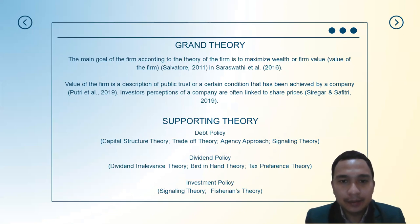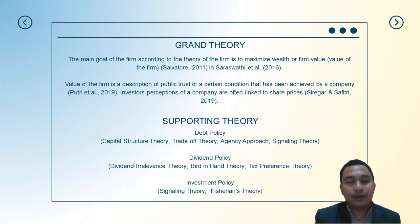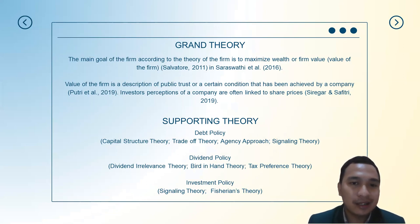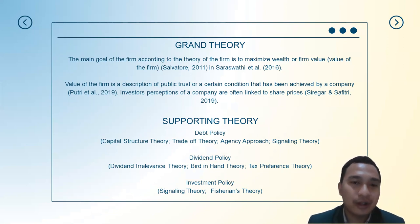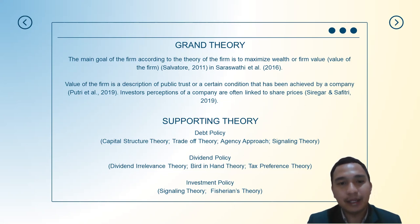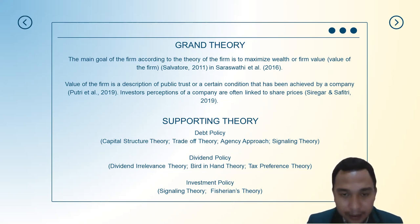In the theory chapter, we have a grand theory and supporting theories. For the grand theory, we use the Theory of the Firm. According to Salvatore in 2011, the main goal of the firm is to maximize wealth or firm value — this is the big statement used in the opening. The value of the firm is a description of a company's condition achieved over time, and investor perception of a company is often linked to share price.